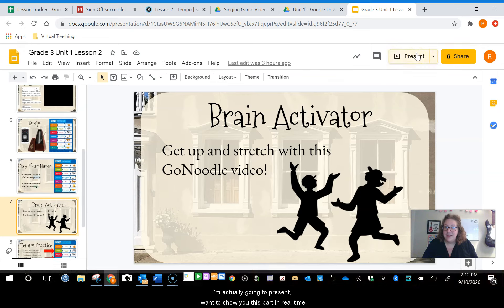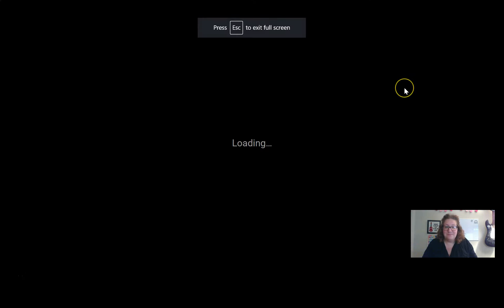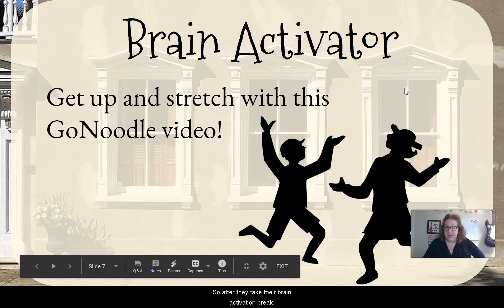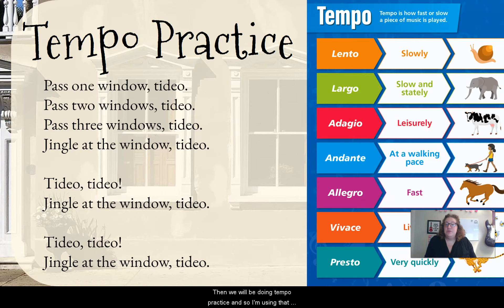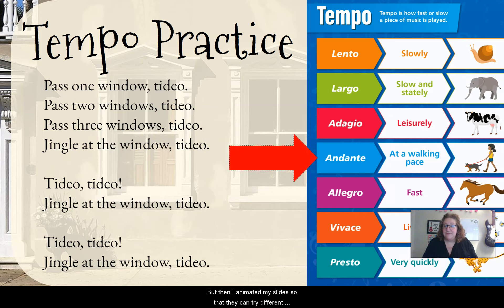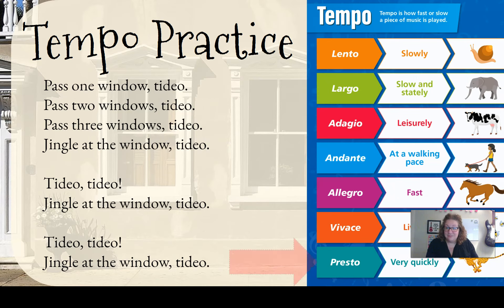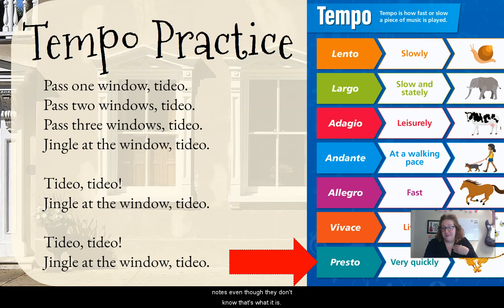I'm actually going to present — I want to show you this part in real time. So after they take their brain activation break, we will be doing tempo practice. I'm using that same song again so that I'm getting the most bang for my buck. They're singing Tideo, and I've animated my slides so that they can try different tempi. First we'll sing it Andante, then Largo, and then Presto — everybody's favorite. By now they've sung the song a lot, so they're getting it in their ears and getting used to the 16th notes even though they don't know that's what it is yet, but they're also practicing the tempo language that they need to know for this unit.